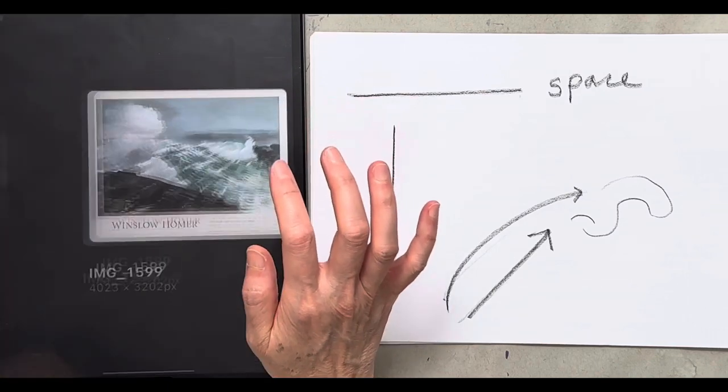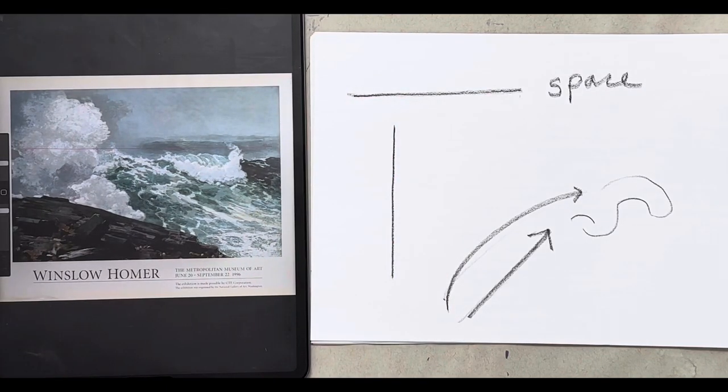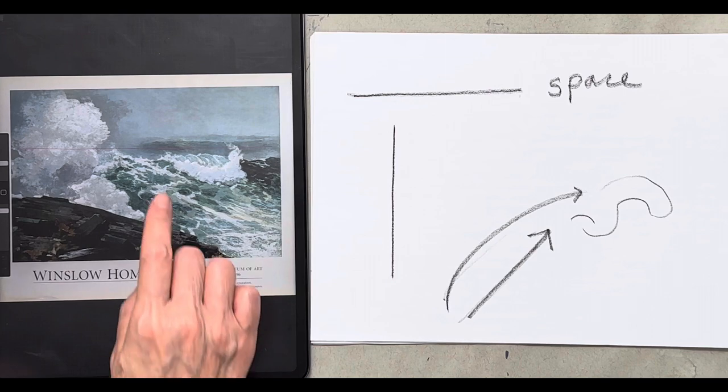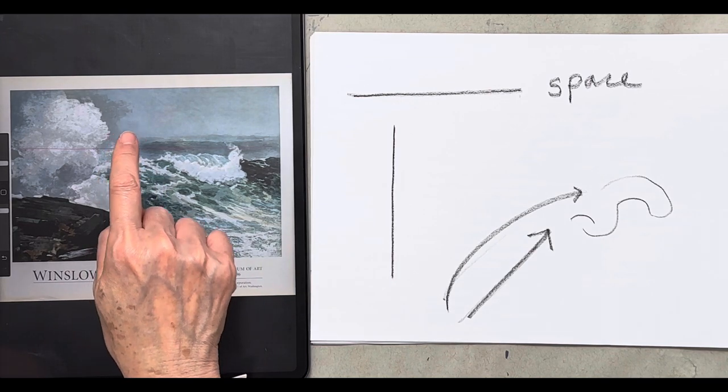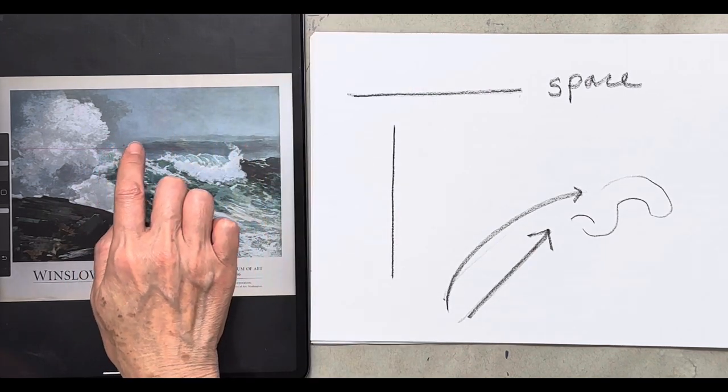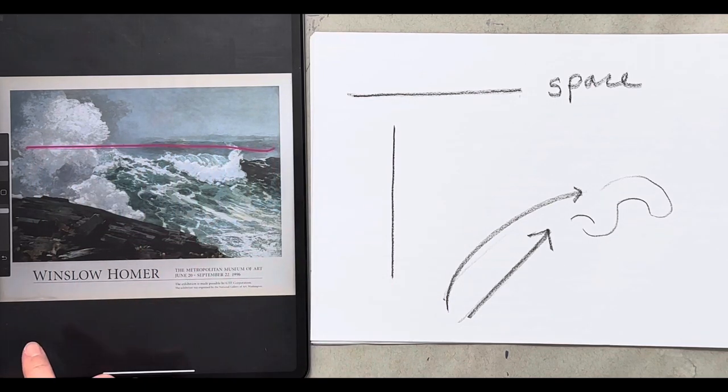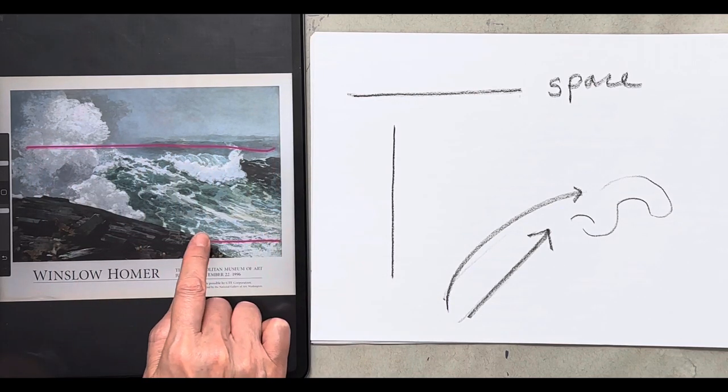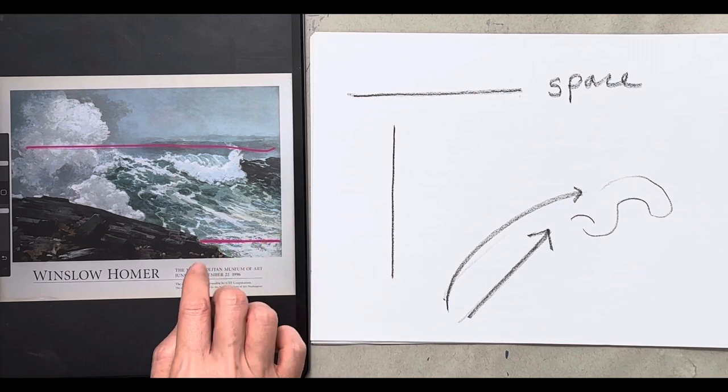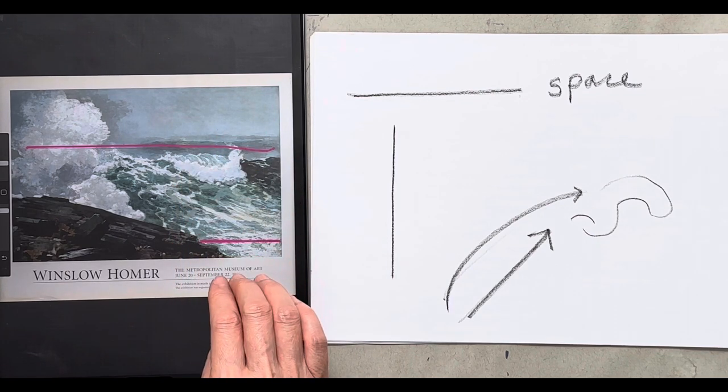We're done by Winslow Homer. So as you can see, the horizontal line is one right here. And then you also have some is kind of right here. So the horizontal line kind of give you a sense of space.